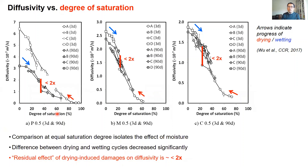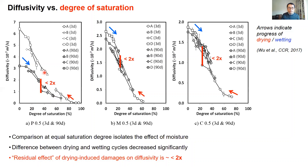However, when we re-plot the data against degree of saturation to isolate the effect of moisture, we see that the difference between the drying and wetting curves decreases significantly — the curves overlap and the apparent hysteresis almost disappears completely. But if we look carefully, we can detect a small residual effect of less than a factor of two that we can attribute to the residual effect of drying-induced damage on diffusion.